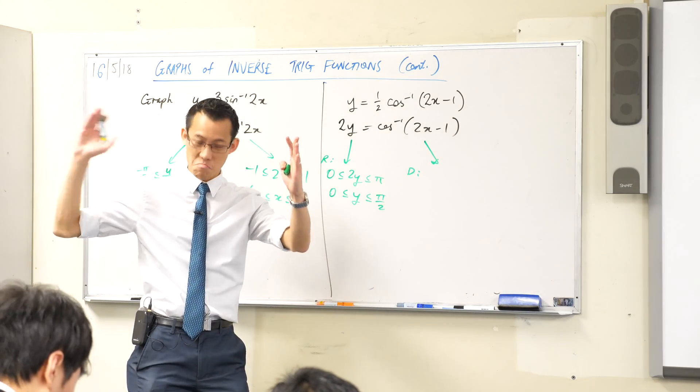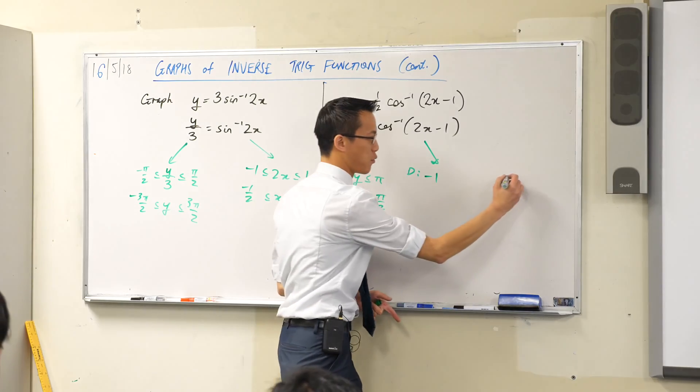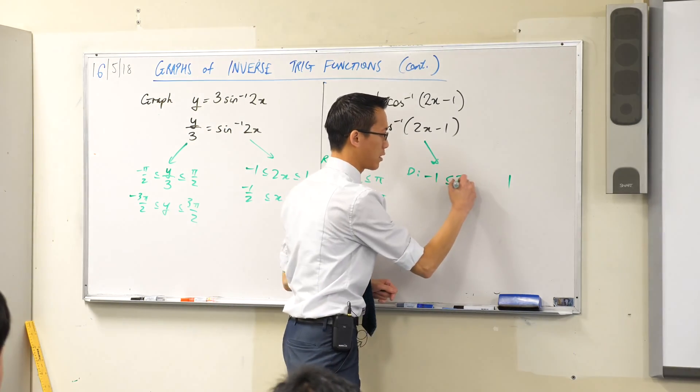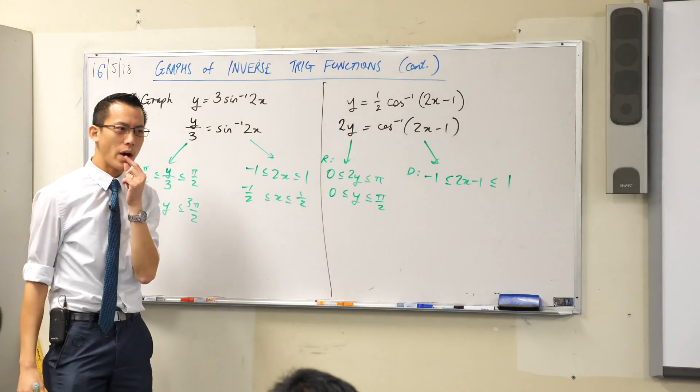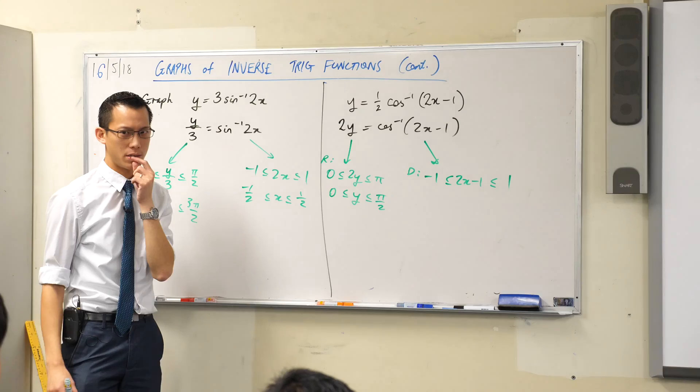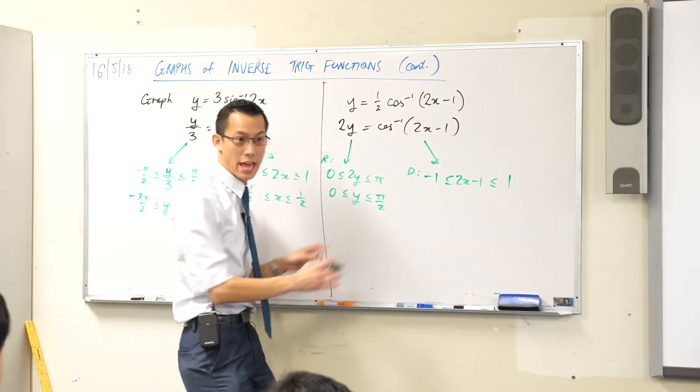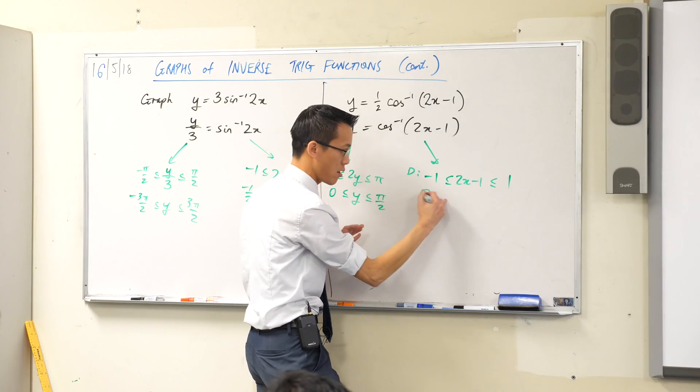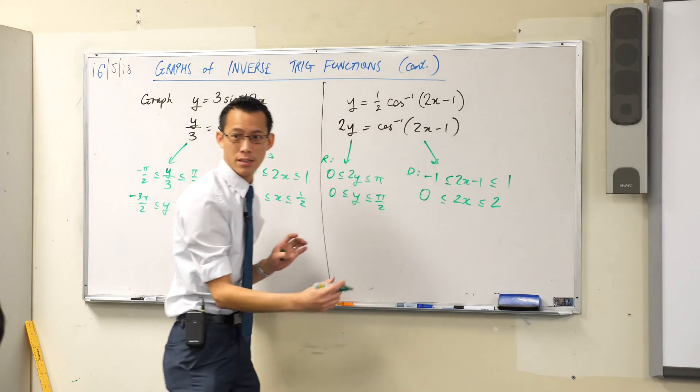What's the regular domain of cos inverse? How far are you going? Negative 1 to 1, it's the same. But what I've got between negative 1 and 1 is this weird beast. Now have a look at this. How do I get the domain out of this? What's the first thing you'd like me to do? I'll add 1 to everything. So that turns this into a 0, it turns this into 2x, and it turns this into 2.